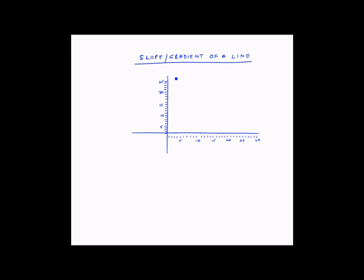Let us understand the concepts of slope or gradient of a line. Consider these two lines — this is the first one and this is the second one. Each of these lines has a different slope. Now let us note down the coordinates of these two lines.